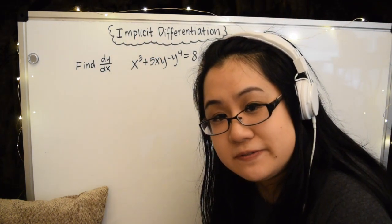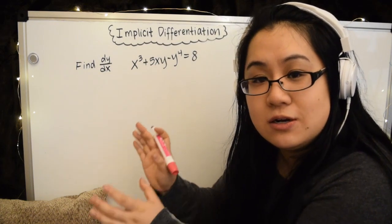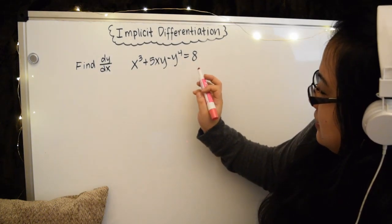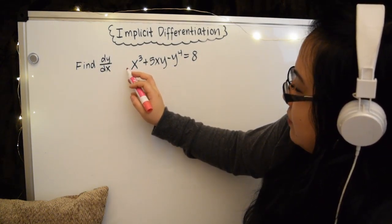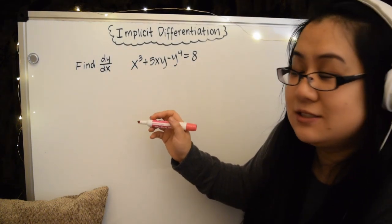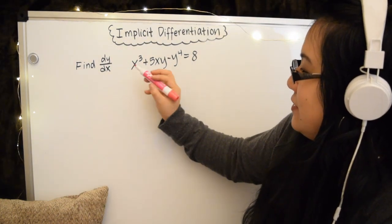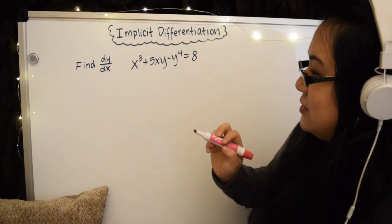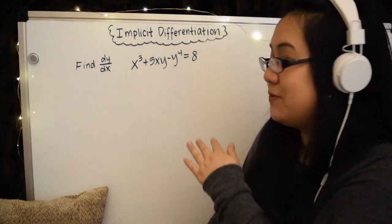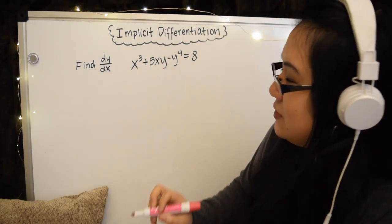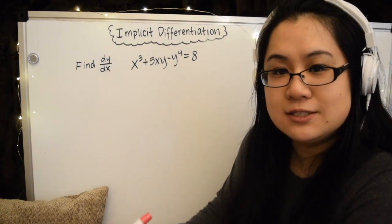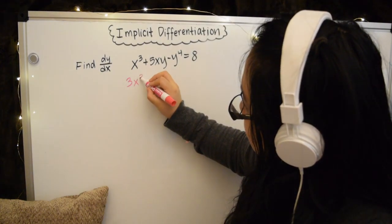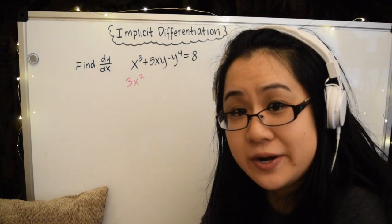This equation gives us some kind of relationship between x and y. It's not a direct relationship, but we can see that they are related in some way because they need to satisfy this. So let's try implicit differentiation. Let's take the derivative with respect to x on both sides.